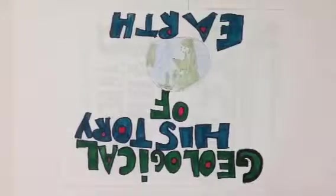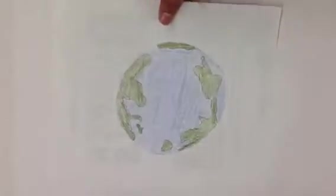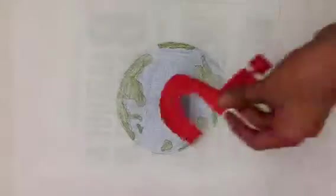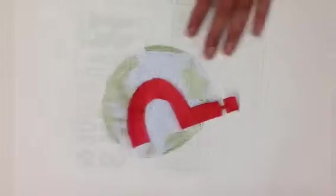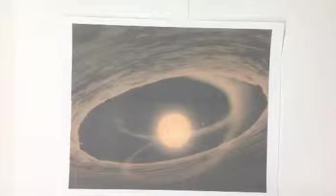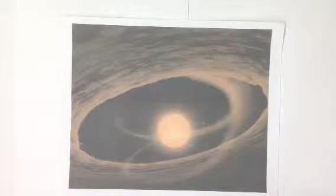The Geological History of Earth. We all live on planet Earth, but do you know the history behind it? Well, it all started 4.6 billion years ago, when the Earth was first formed from a disc-shaped mass of dust and gas left over from the formation of the Sun, which also created the rest of the solar system.